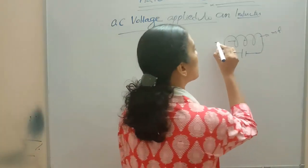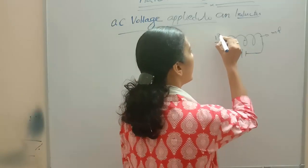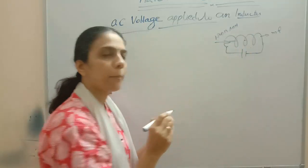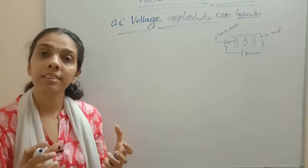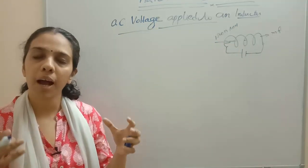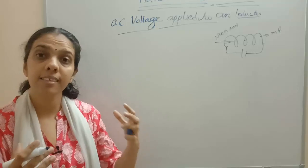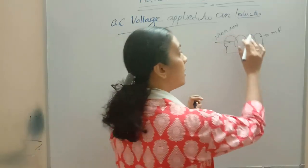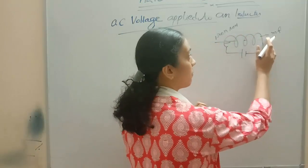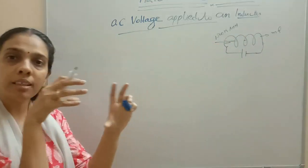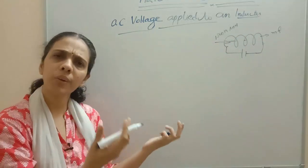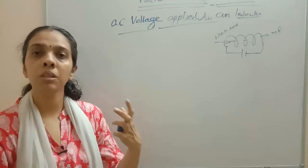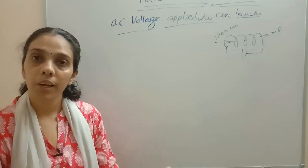If I am introducing an iron rod into this coil, what will happen? The magnetic flux linked with the circuit — that is, the number of magnetic field lines — is getting changed because the magnetic field was uninterrupted, but now I am interrupting it with the iron rod. So magnetic flux linked with the circuit changes.